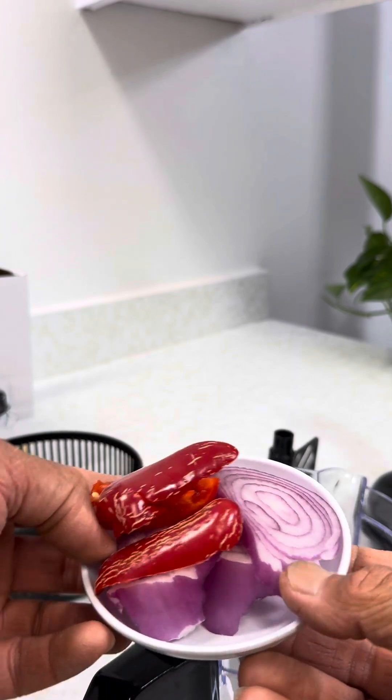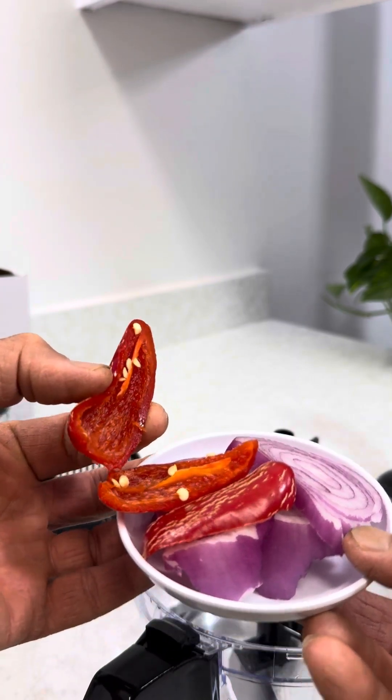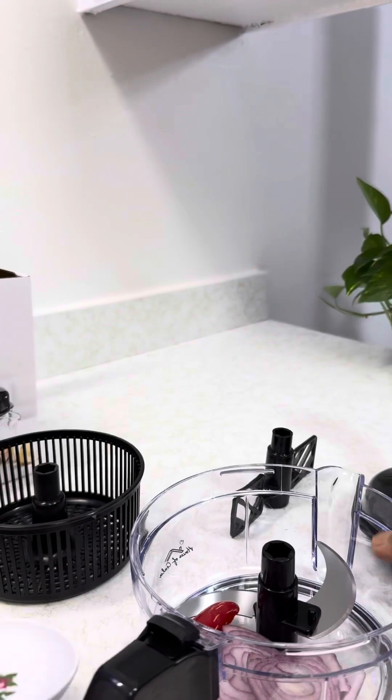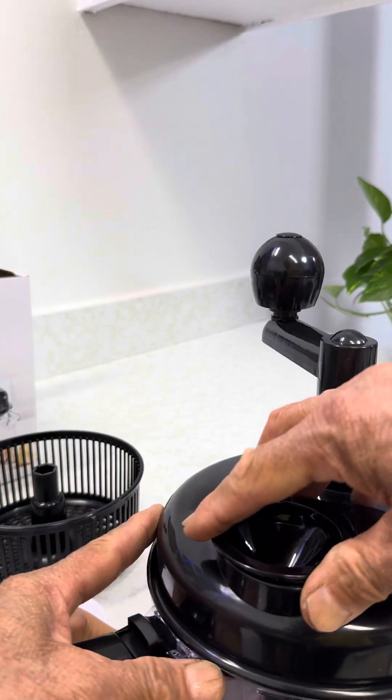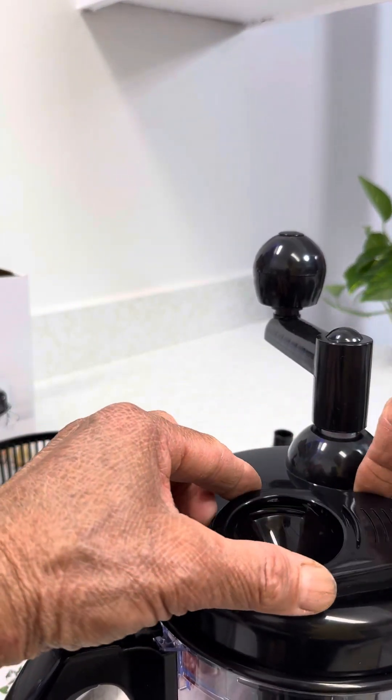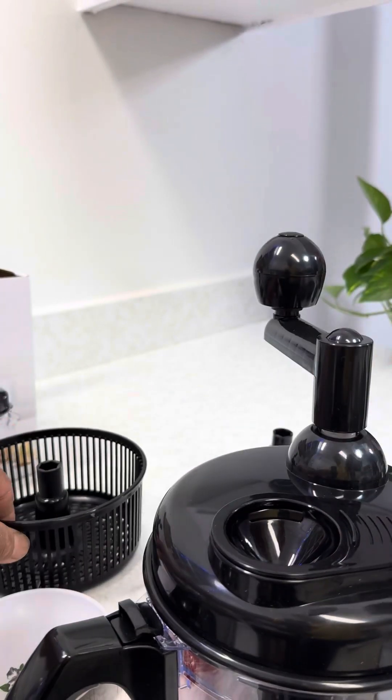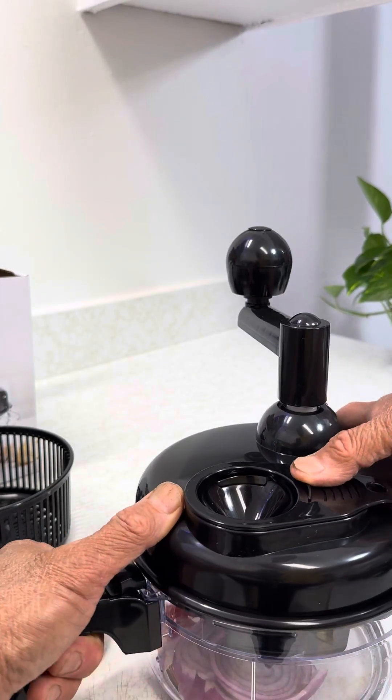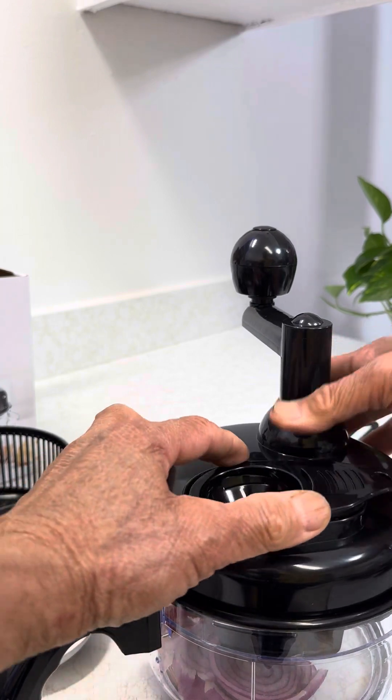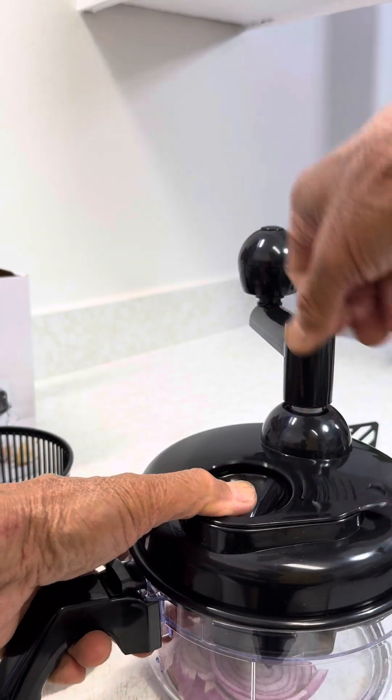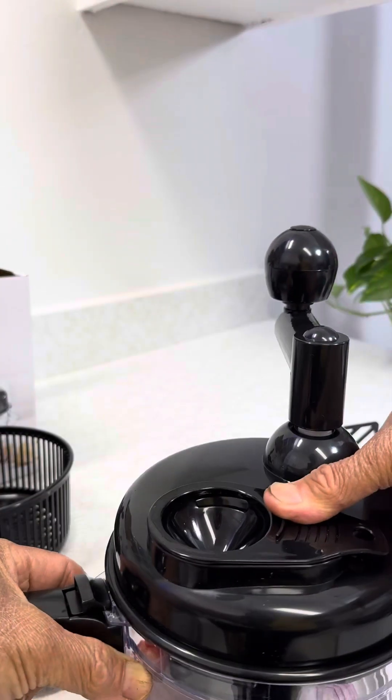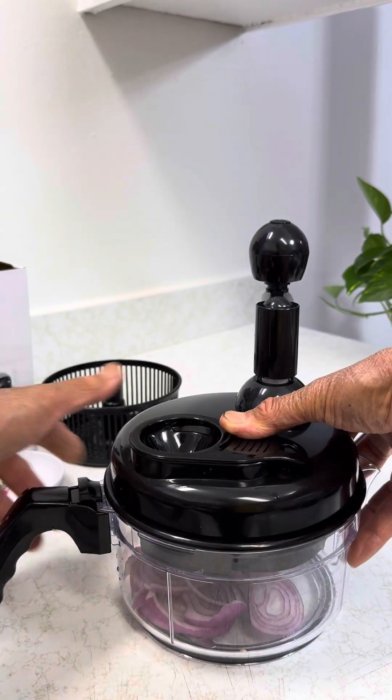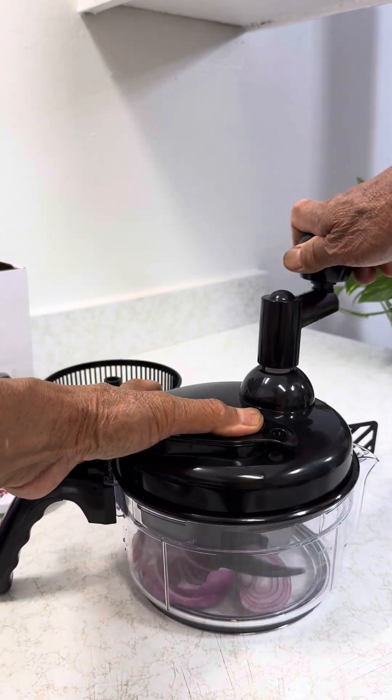This is my onion and jalapeño pepper. Put it in here and put the lid. I like this because I don't have to use an extension cord to plug into my outlet. This doesn't need an electricity cord to connect. Like that. You see the onion? I'm going to put it right here so you can see, and then I'll hold it.